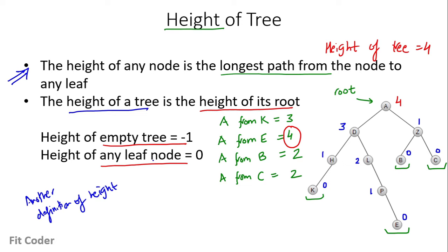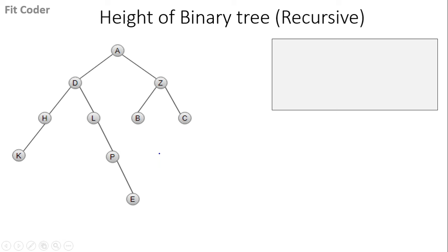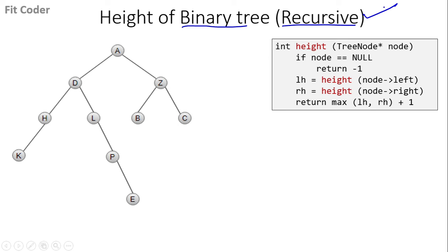Based on this definition, we will look at the pseudocode for calculating the height of the tree. The height of a binary tree can be calculated both recursively and iteratively. Here we will focus on the recursive approach. The pseudocode has a function 'height' which takes a node parameter.